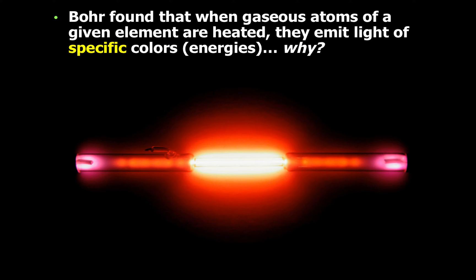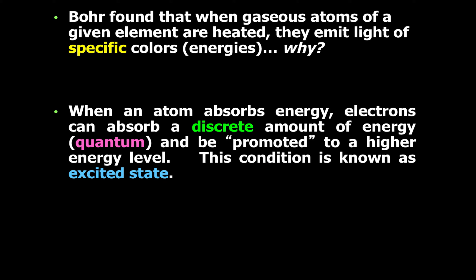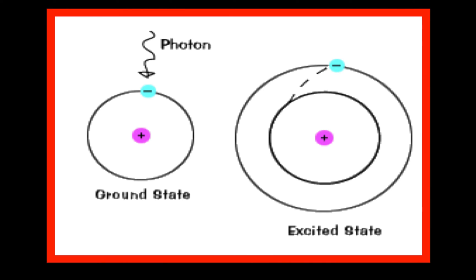Bohr found that when gaseous atoms of a given element are heated, they emit light of specific colors or energies. When an atom absorbs energy, electrons can absorb a discrete — meaning specific — amount of energy, called a quantum, and be promoted to a higher energy level. This condition is known as excited state. This diagram shows how energy is being absorbed by an atom in the ground state, causing an electron to jump to a higher energy level, creating the excited state.